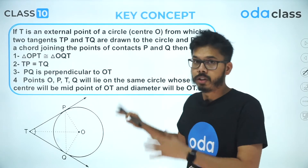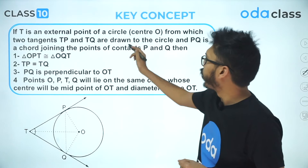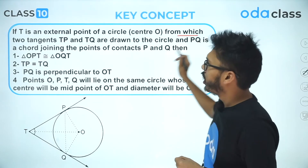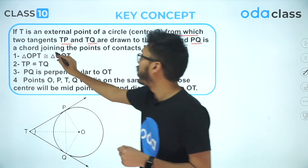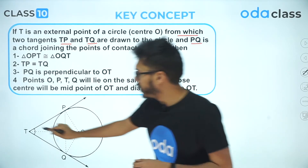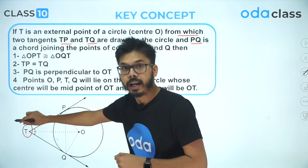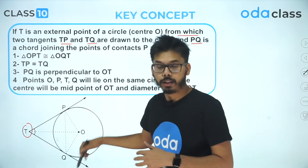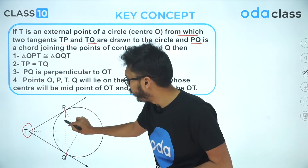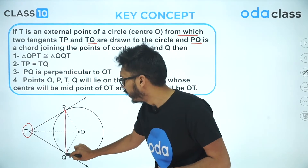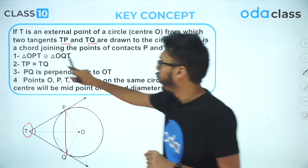I have collected four results which are related to tangents. If T is an external point of a circle from which two tangents TP and TQ are drawn to the circle, and PQ is the chord joining the two points of contact P and Q — T is the external point, TP is one tangent, TQ is another tangent, P and Q are points of contact. Joining P and Q gives a chord, which is also called the chord of contact.